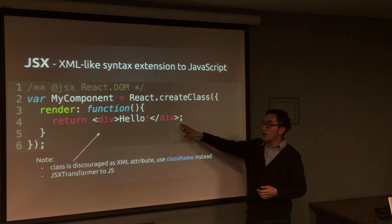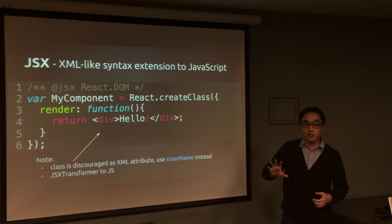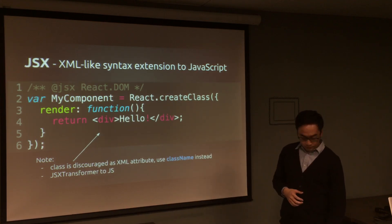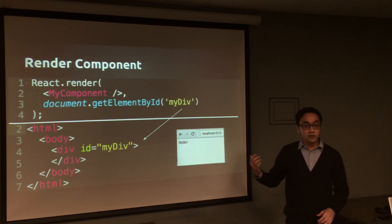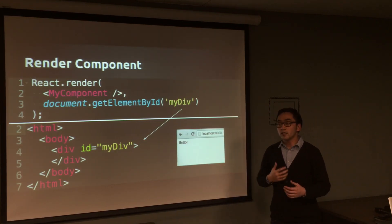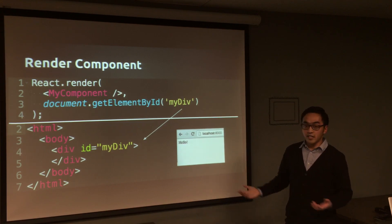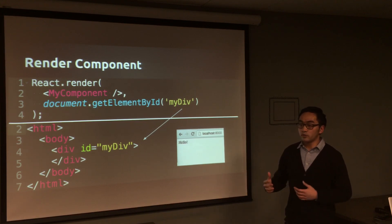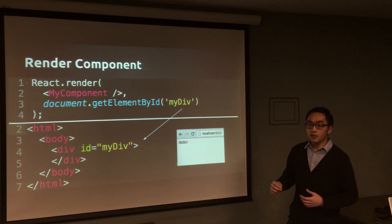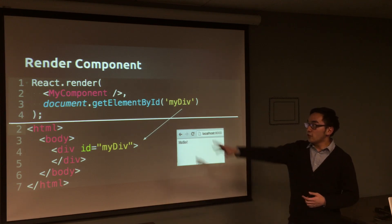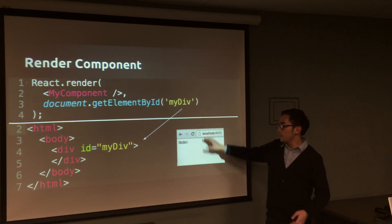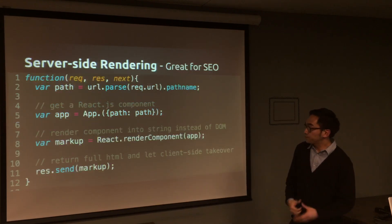Also, if you want to put a class name on an element, you can't use just 'class' — you need to use 'className'. So, once we've created a React component, how do we render it to the DOM? It's very easy: just React.render. Older code used React.renderComponent, but that's deprecated now. The first argument is your component, the second is your DOM node — getElementById for your div. And it renders 'Hello'.